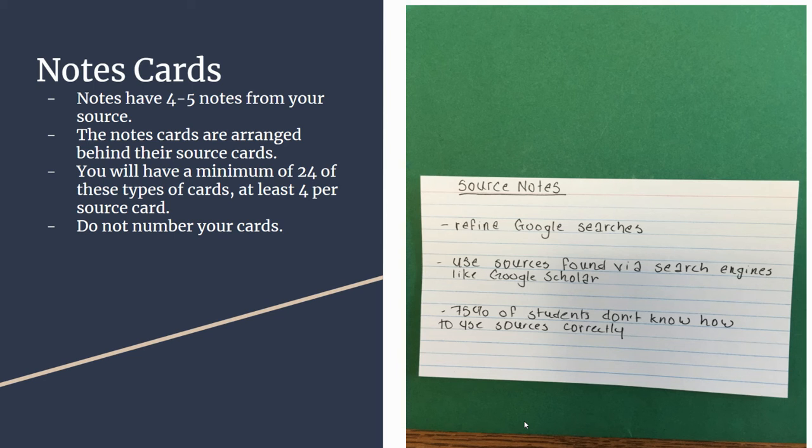Those source note cards are arranged behind their source card so everything is organized. So you will know once you come to a source card all of the notes cards behind that will have information from that particular source. You will have a minimum of 24 of these types of cards which means you have at least four note cards with notes on them per each one of your sources and that gets you to the 32 count.